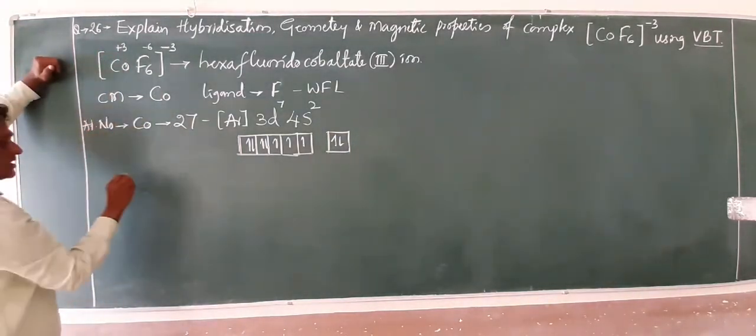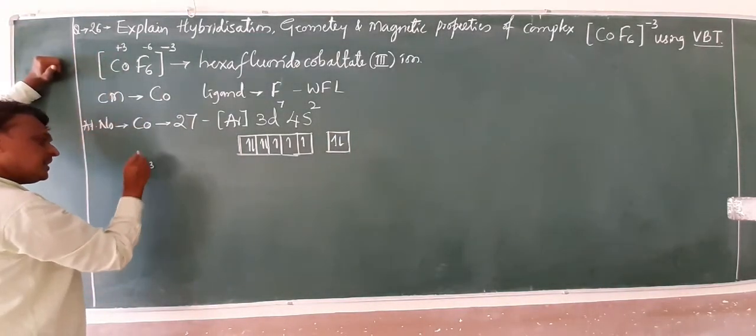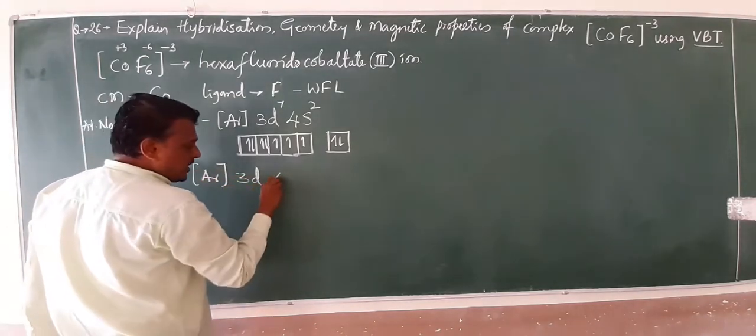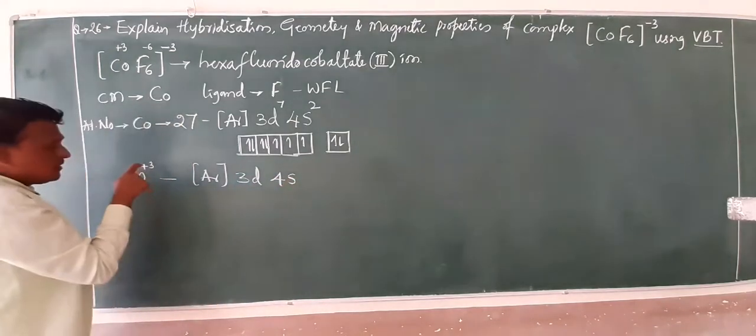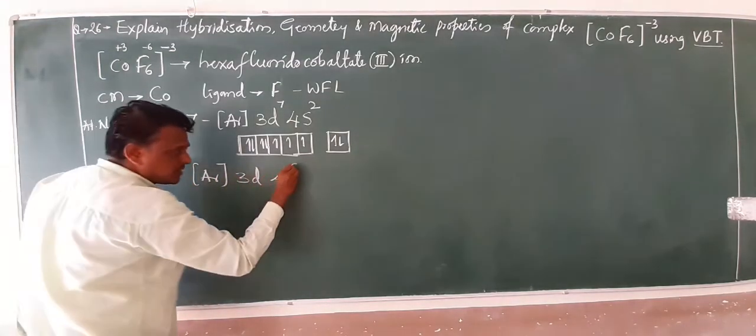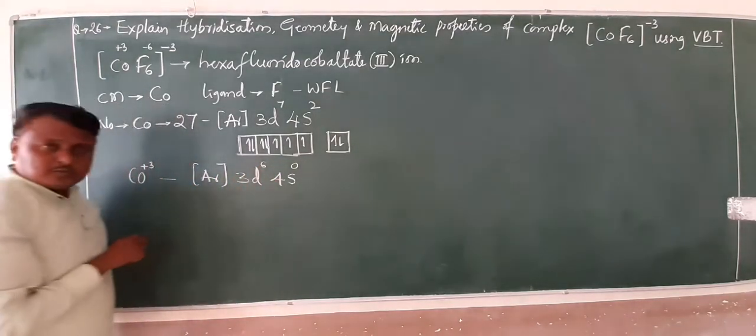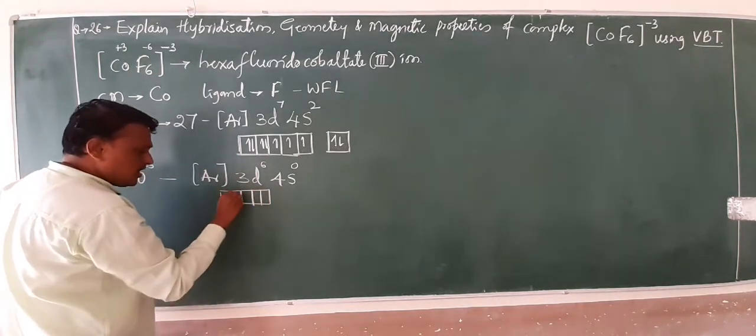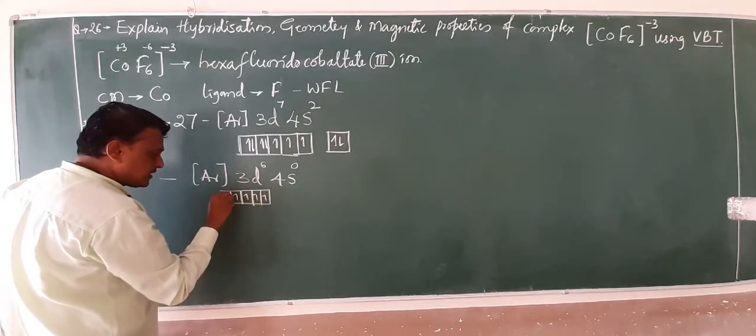The cobalt oxidation state comes under plus 3. Now argon 3d 4s, remove 3 electrons. 4s becomes 0, the 3d is close to 6. Now 1, 2, 3, 4, 5, this is your 6. There are no electrons in 4s.